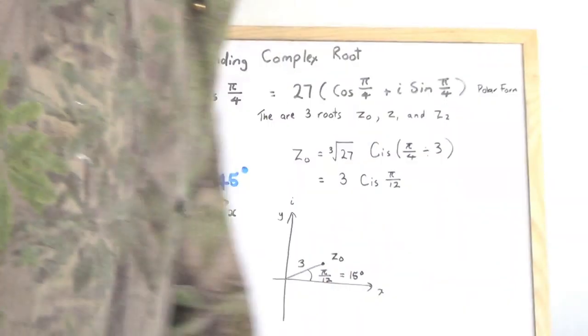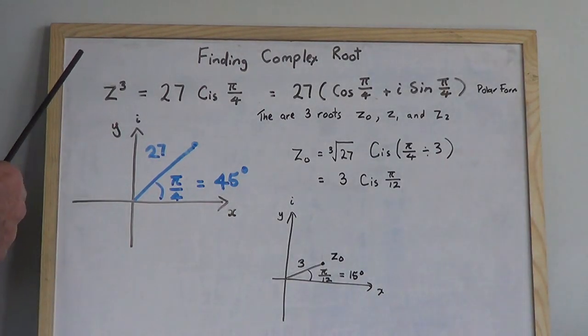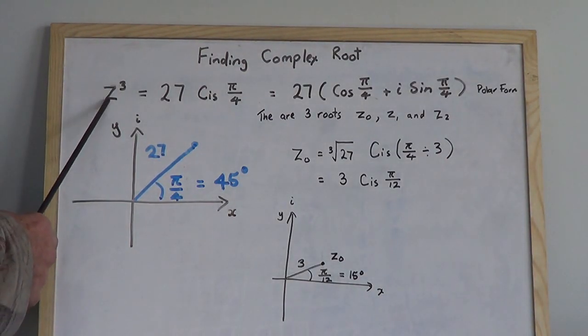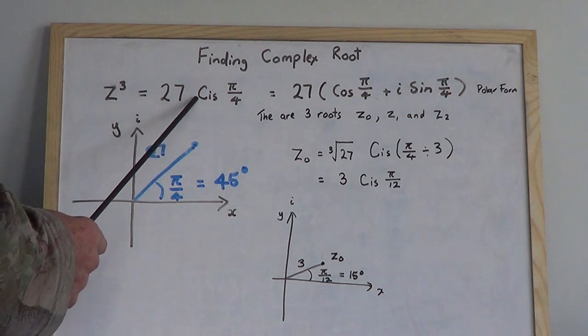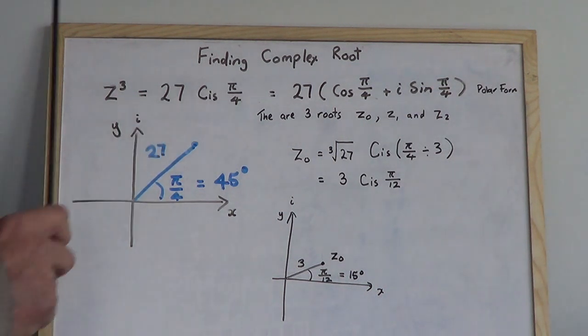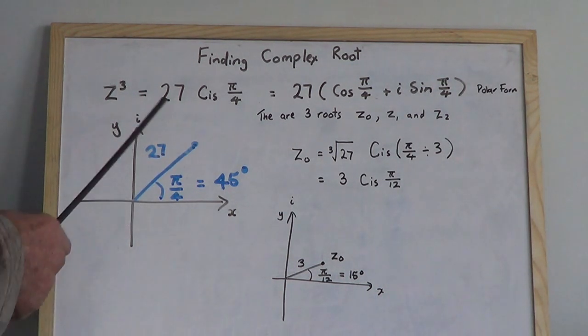Hi, I'm Craig Graham. Today I'm going to show you how to find complex roots simply. Here we go. Here's your question: z³ = 27 cis(π/4). Now this is in polar form.